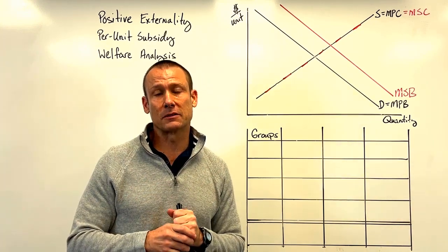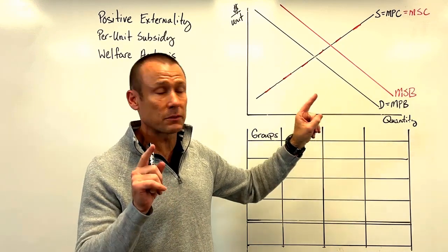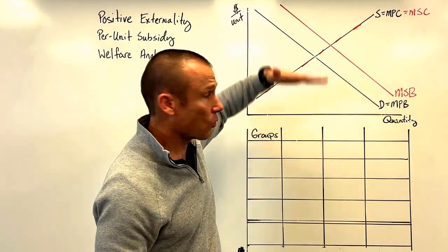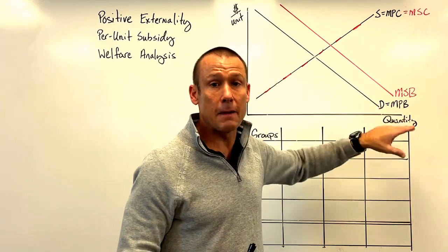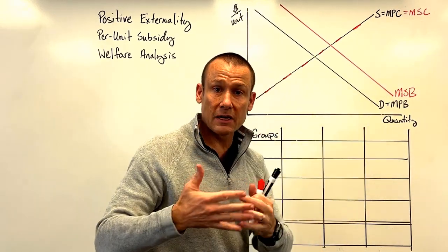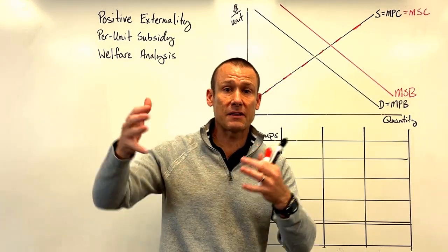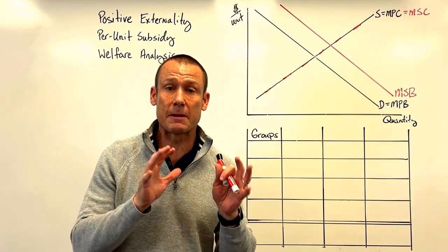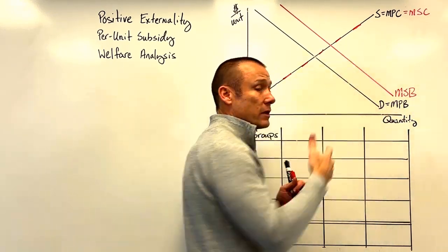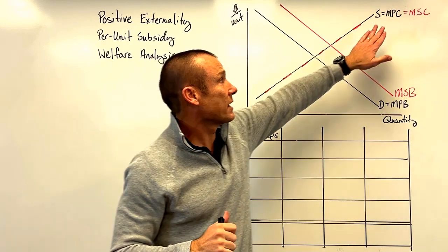Let's get to it. Looking at the graph, we have a positive externality from consumption. What tells us that is the MSB curve is above the MPB curve — I like to keep that vertical orientation when talking about the MSB's relation to the MPB curve. That means for every unit of output, there's not just a private benefit to the consumer; there's also an external benefit going to society that the consumer is not internalizing. The distance between the MPB line and the MSB line is the per unit positive externality.